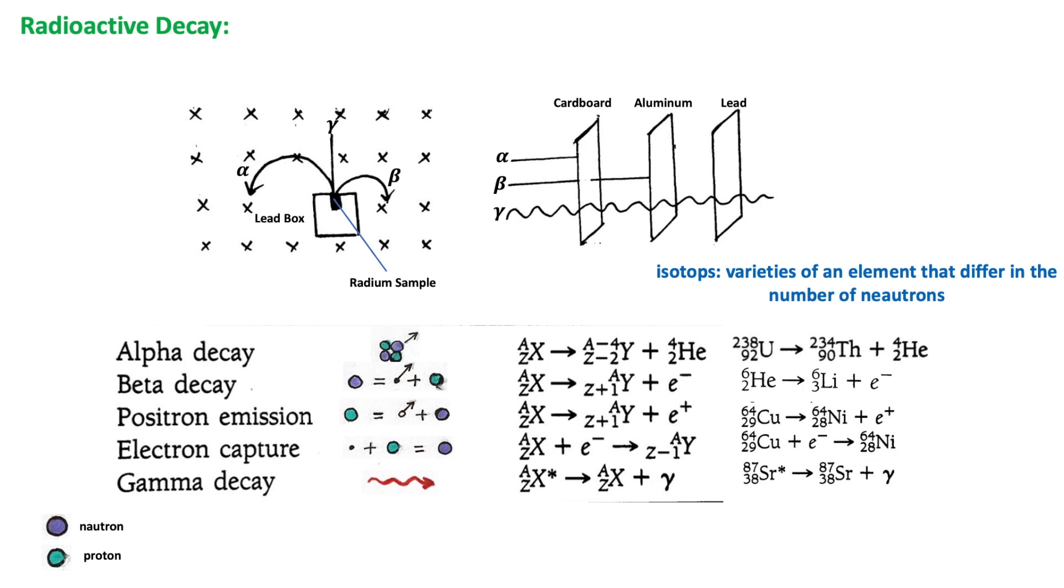Most excited nuclei have very short half-lives, but a few remain excited for as long as several hours. The long-lived excited nucleus is called an isomer. This excited nucleus of strontium decay through gamma rays to the ground state.